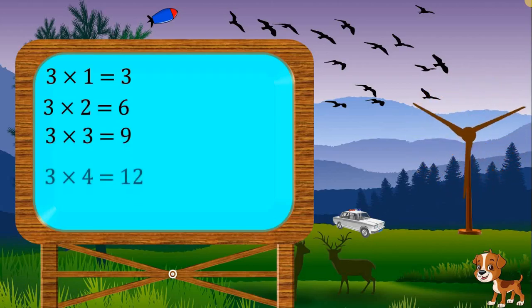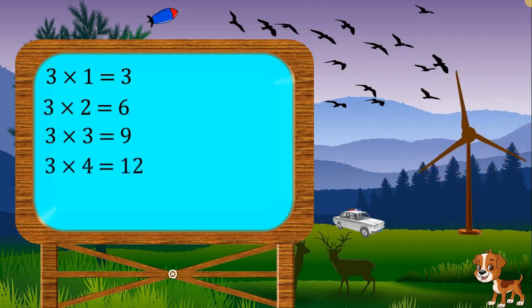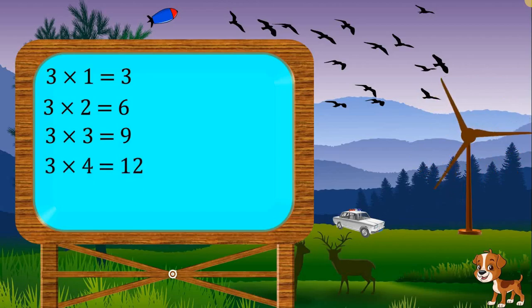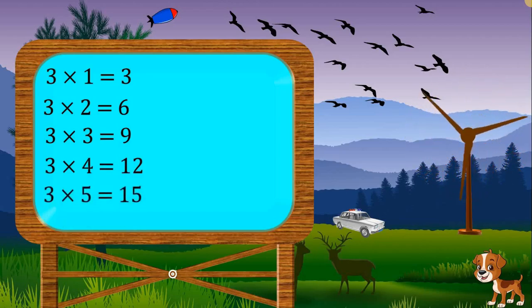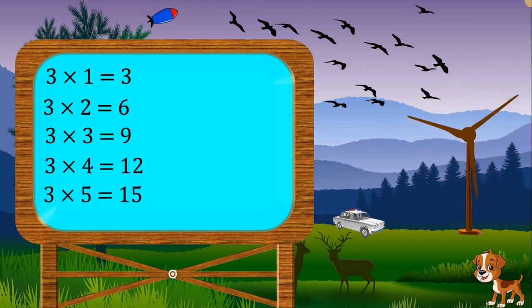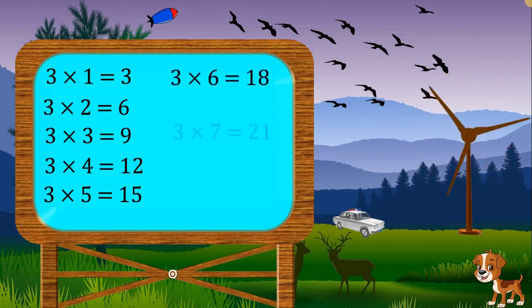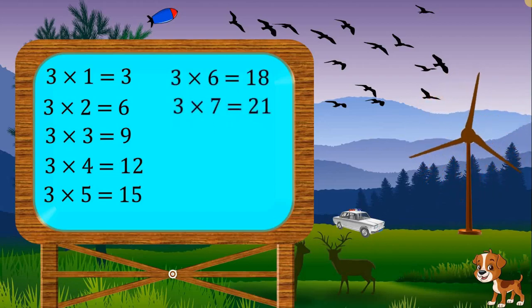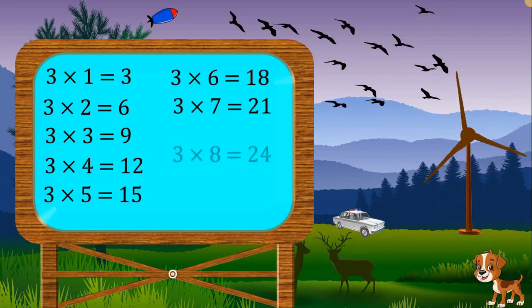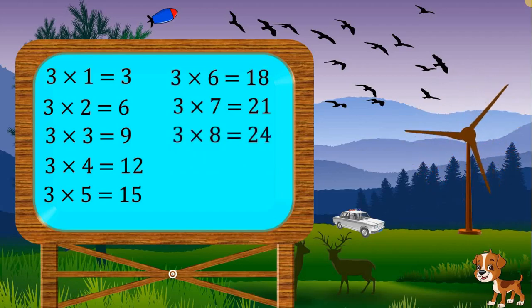Three 4s are 12. Three 5s are 15. Three 6s are 18. 3-7-21. 3-8-0-25.